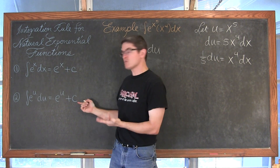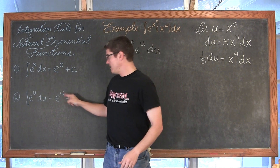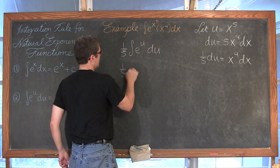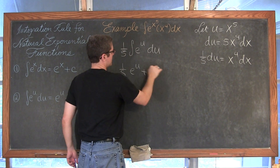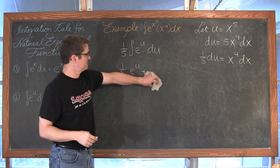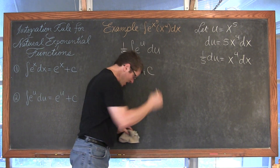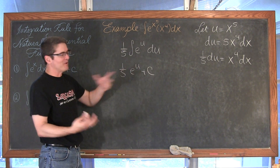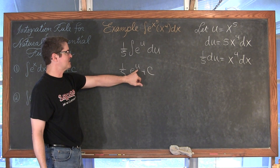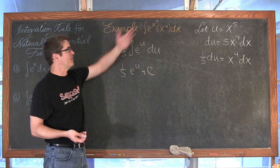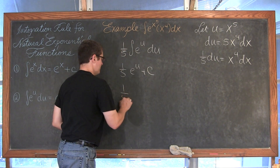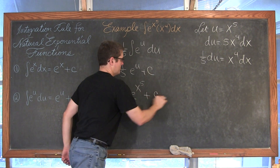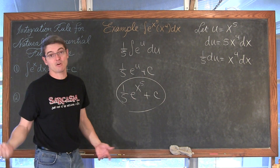The indefinite integral of e to the u is e to the u plus c, so we have one-fifth e to the u plus c. Now we substitute back, replacing u with x to the fifth. Our final answer is one-fifth e to the x to the fifth power, plus c. That is the end of our first example.